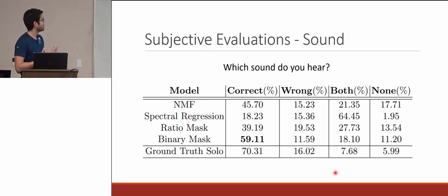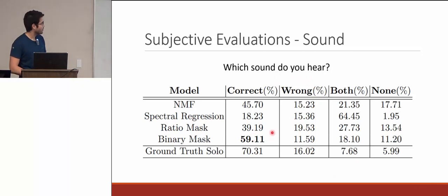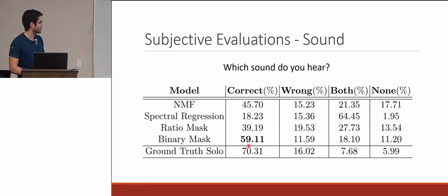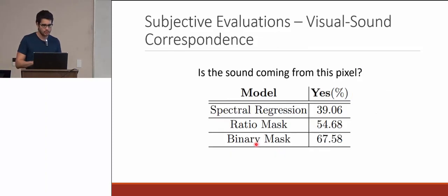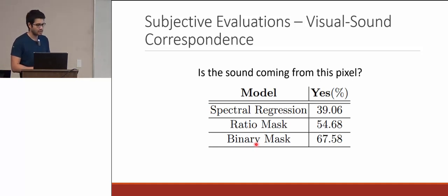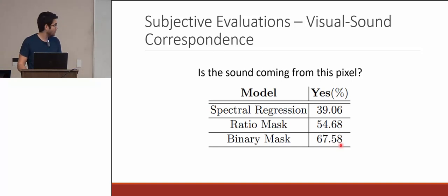For subjective crowdsourced evaluations, participants were asked which sound they heard. The binary mask mapped correctly — participants identified the correct sound. Even with ground truth solo audio, accuracy was only about 70%, largely due to people's varying ability to recognize instruments. The binary mask performed much better than the other networks. They also tested visual-sound correspondence by asking whether sound was coming from a specific pixel, and again the binary mask significantly outperformed the alternatives.